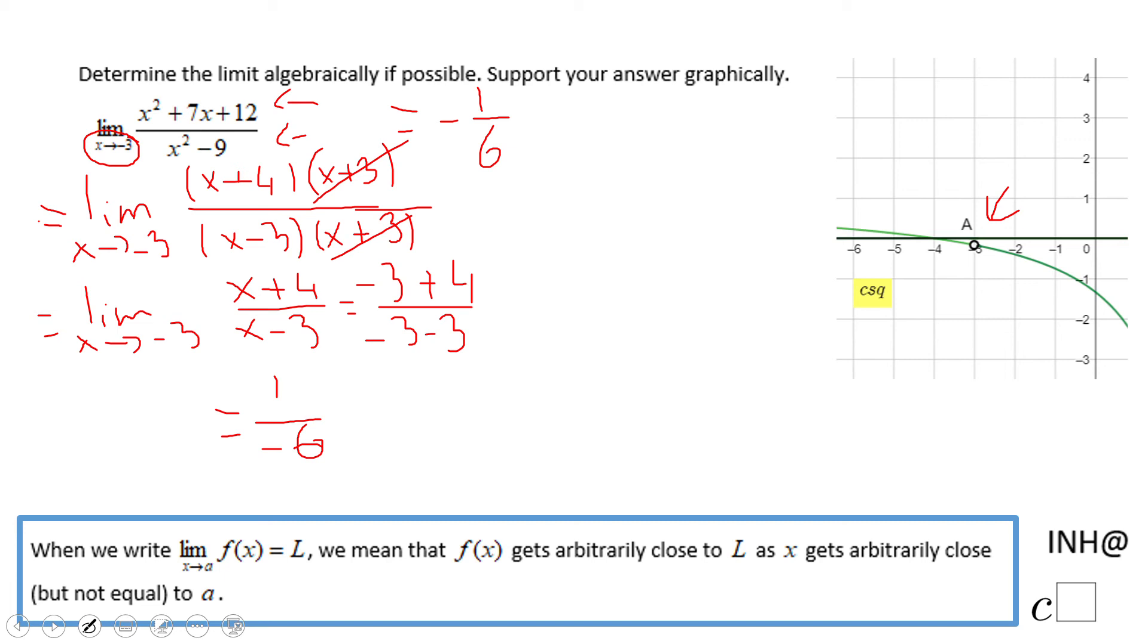But if we look, when x is getting closer and closer to negative 3, the value of the function is getting closer and closer to that value close to 0 between 0 and negative 1, which is negative 1 over 6.